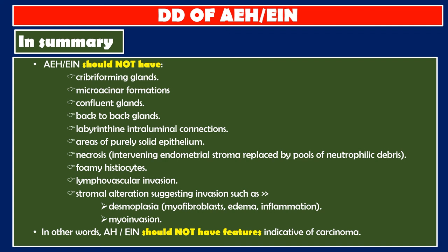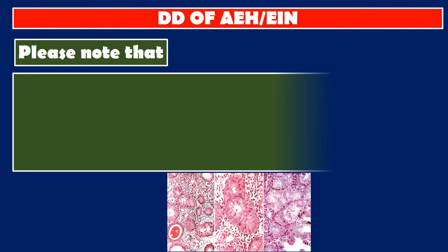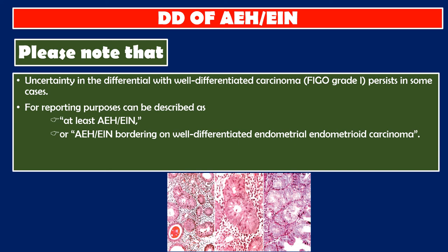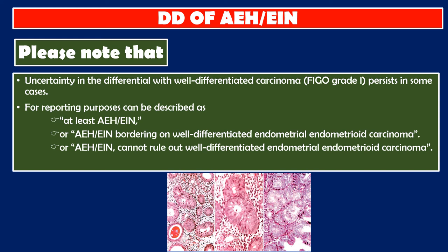In other words, atypical endometrial hyperplasia and endometrioid intraepithelial neoplasia should not have features indicative of carcinoma. Please note that uncertainty in the differential with well-differentiated carcinoma FIGO Grade 1 persists in some cases. For reporting purposes, such cases can be described as 'at least atypical endometrial hyperplasia/endometrioid intraepithelial neoplasia (AEH/EIN) bordering on well-differentiated endometrial endometrioid carcinoma' or 'AEH/EIN cannot rule out well-differentiated endometrial endometrioid carcinoma.' Both conditions will in general receive the same treatment.